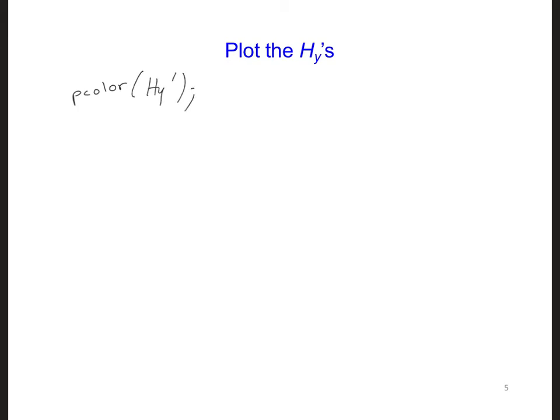An apostrophe is needed here after HY, and this is because MATLAB plots the second index along the horizontal axis and then the first index along the vertical axis. But since we've defined the X axis to be the first index and the Z axis to be the vertical axis, we need to transform the HY array before plotting it.